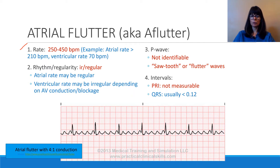Applying our rules and counting the QRS complexes — 3, 4, 5, 6, 7 — gives us a ventricular rate of 70. But if you're looking at the P waves, or the atrial rate, these P waves look very different from our normally shaped P wave in normal sinus rhythm.